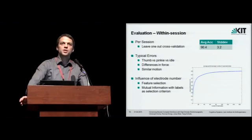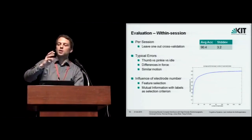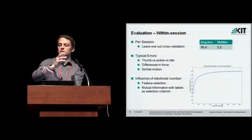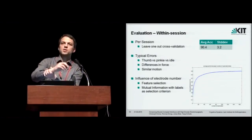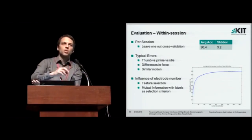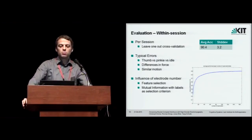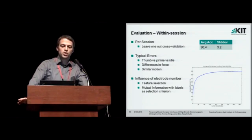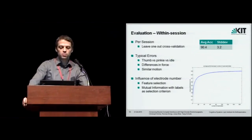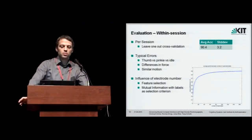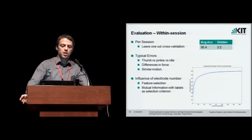Typical errors that occur are confusions between thumb, pinky and idle gestures. That's mainly due to the pinky and thumb muscles are in parts located close to the wrist. So they are not under the area we actually recorded. So it's a little bit harder to recognize those. But in total, every gesture was recognized correctly in the majority of cases. So there are no gestures that we can't actually recognize.